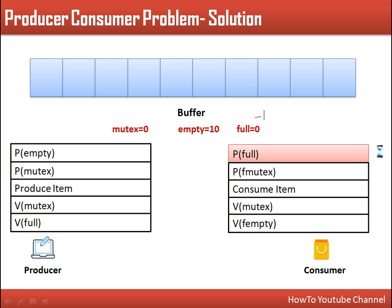Now when the producer wants to produce data, it executes P(empty) first, decreasing empty from 10 to 9. Then it executes P(mutex), decreasing mutex to 0, and enters its critical section to produce a data item. It then signals V(full), increasing full. The consumer also starts executing its next instruction. This is the proper solution for the producer-consumer problem using semaphores.